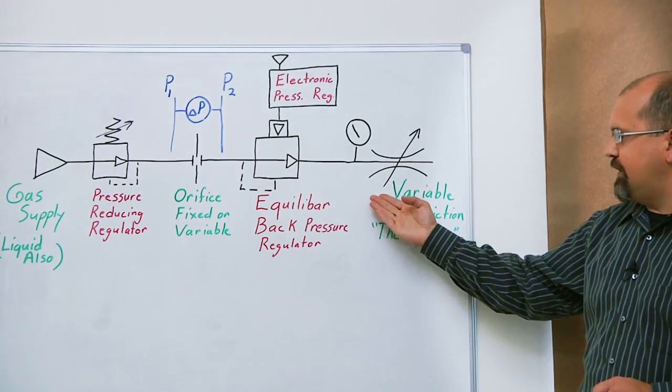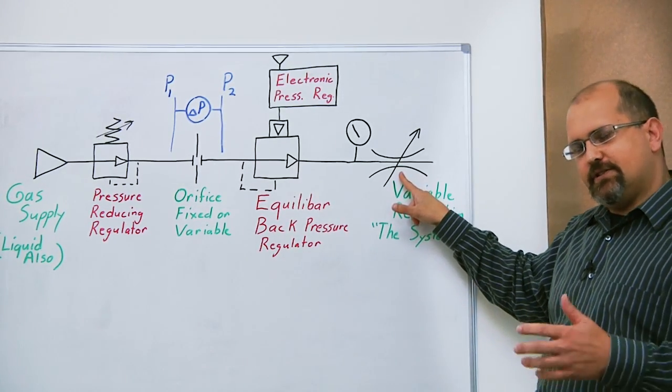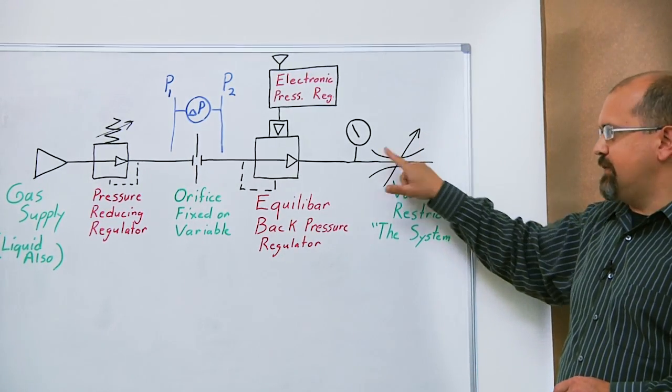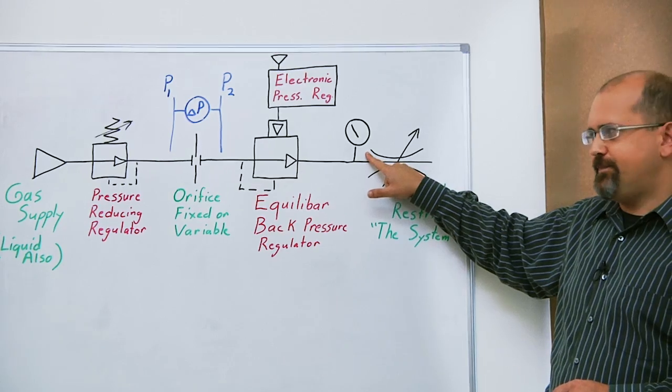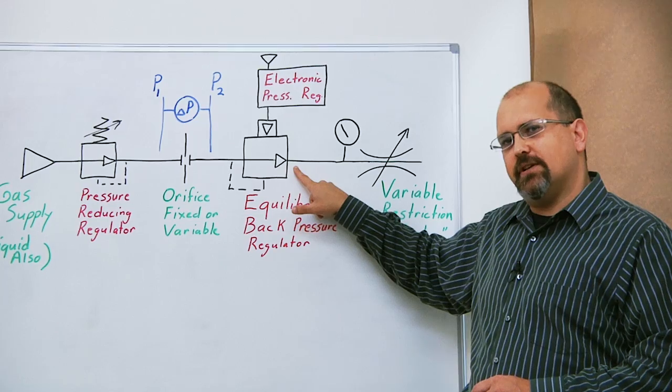So regardless of variations in the system—here I've shown the system as a variable orifice, but anything that's variable going on in the system which would change the system pressure—is sensed and automatically compensated for by the back pressure regulator.